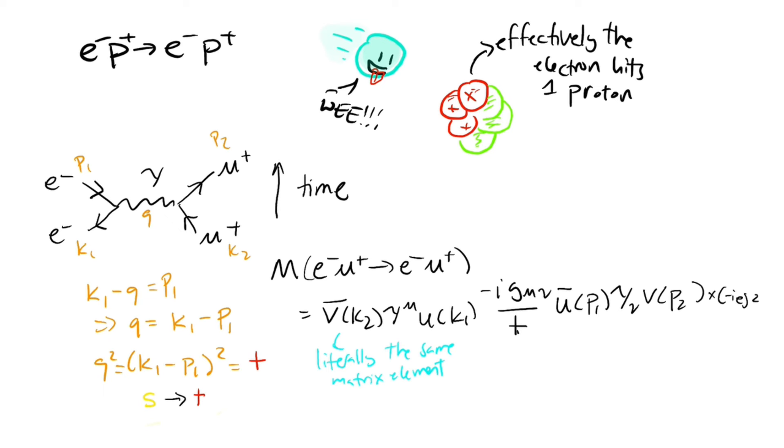But in our answer, we had s, t, and u values. So what do we do with the t and the u? Well, if s is replaced with t, the only other option is t being replaced with u, and u being replaced with s. This trick that we use here is called crossing symmetry, and is used many times to recycle the same old Feynman diagrams. Doing this, we get this expression for the matrix element.